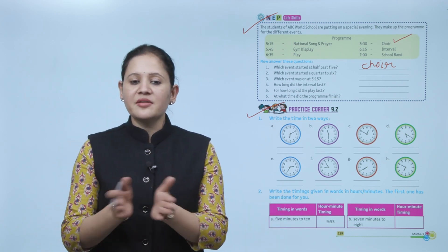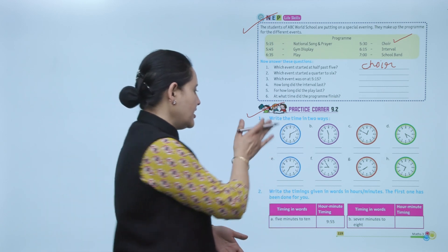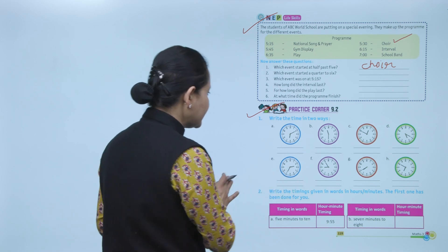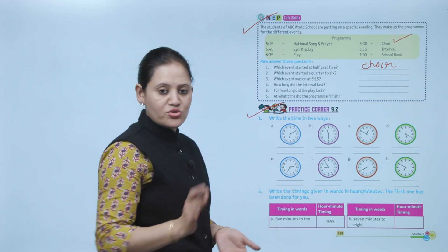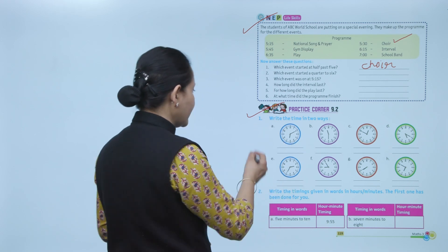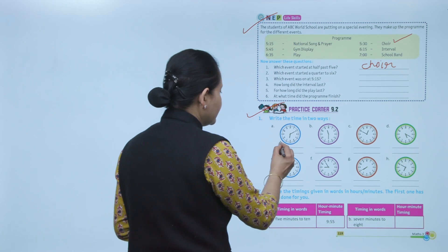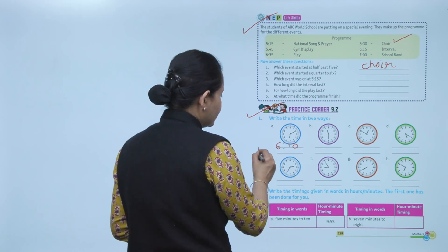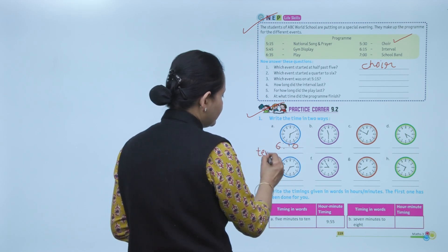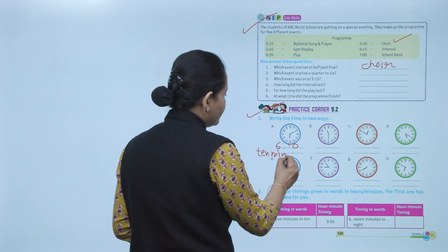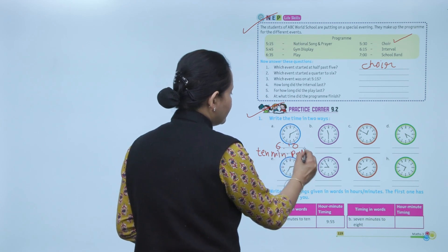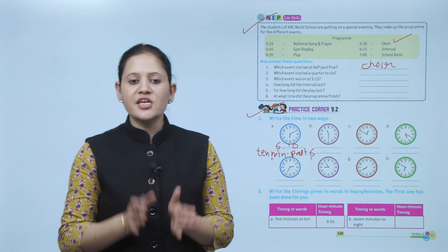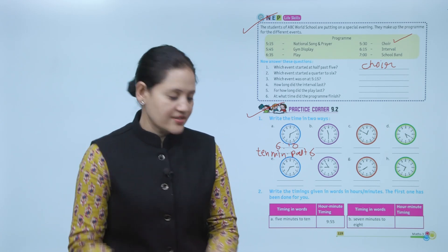Next is Practice Corner 9.2 — write the time in two ways. In this clock the small hand is between 6 and 7, and the big hand is on 2, which means 10 minutes. So we write the time as 6:10, or 10 minutes past 6.